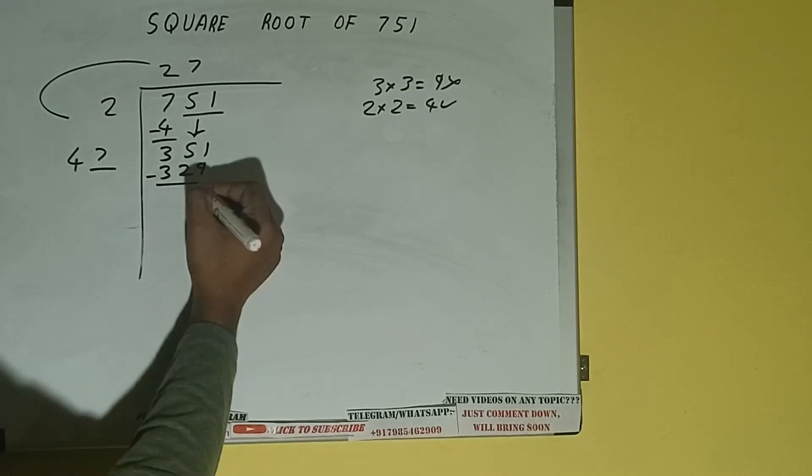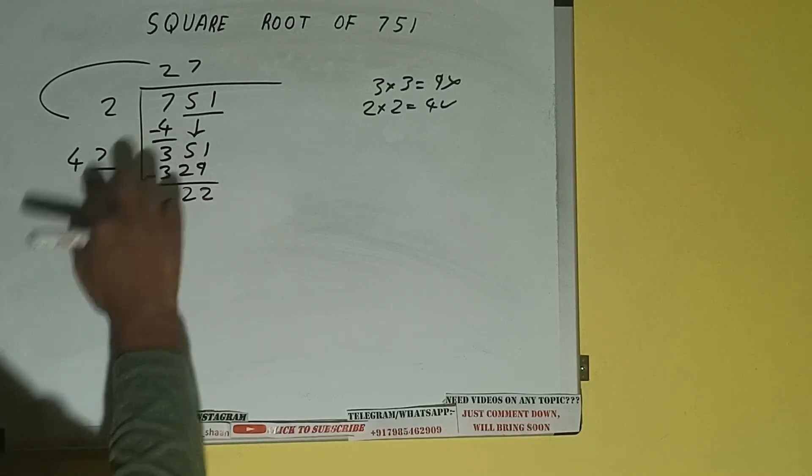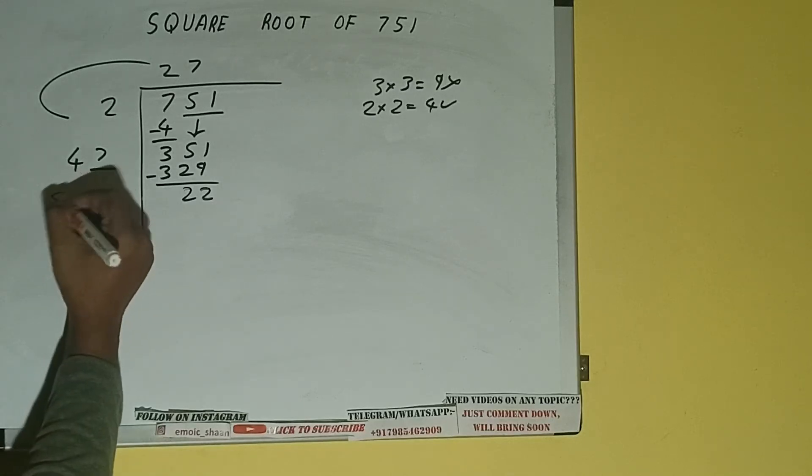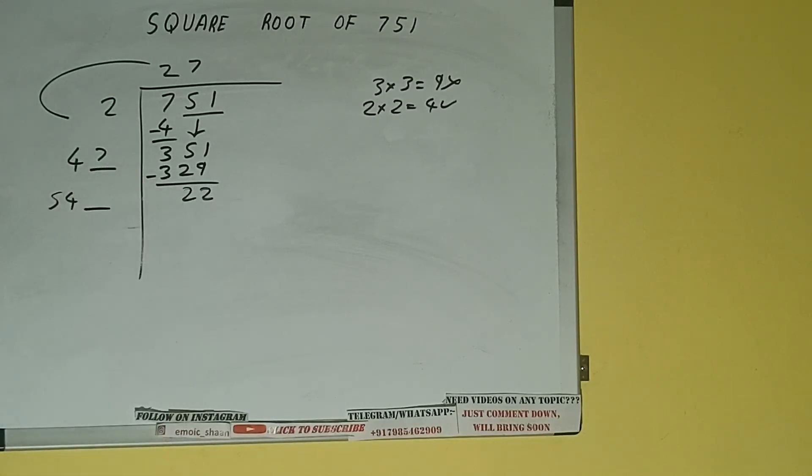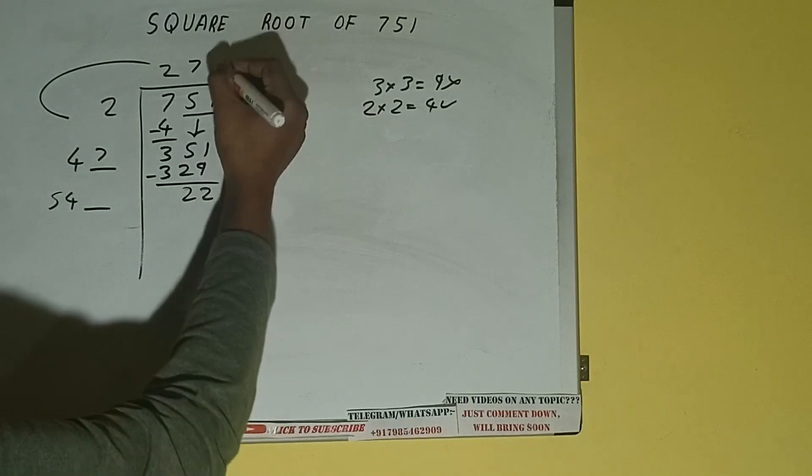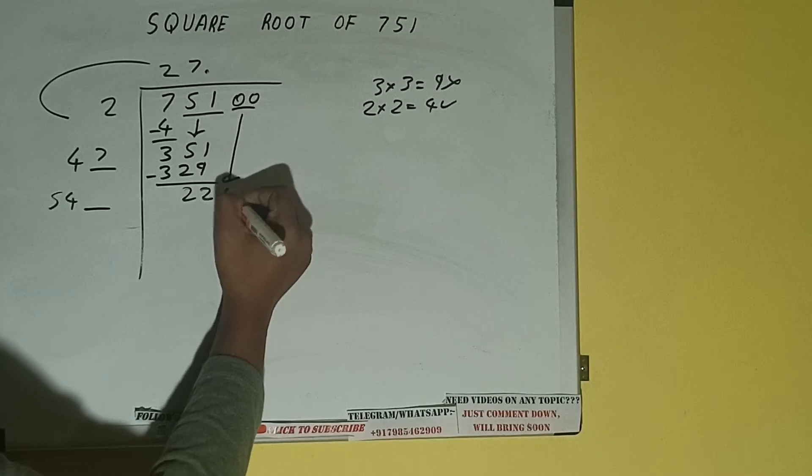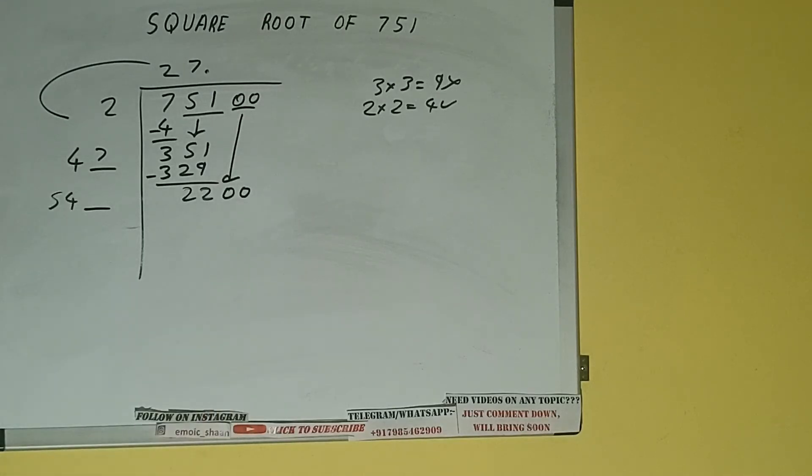And we'll have 22. Now 47 times 7, so add both. 47 plus 7 is 54, and 1 digit extra. This number we need to make bigger, but we don't have more pairs. So we put a decimal. Once we put the decimal, we can bring a pair of zeros down, and it will be 2200.